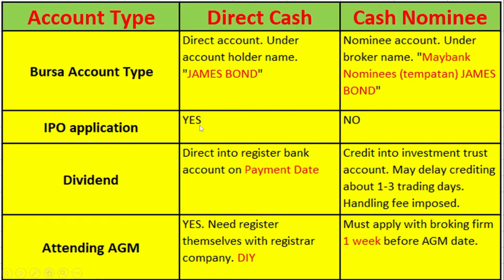Only the direct account can apply for IPO. For dividends, the direct account will be credited into the registered bank account on the payment date, while the cash nominee account will be credited into the investment trust account, which might be slightly delayed by one to three trading days, and there will be a handling fee imposed.